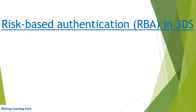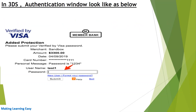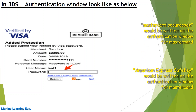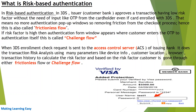Welcome to this session on risk-based authentication (RBA) in 3DS. In previous sessions I explained how 3DS authentication works. This screenshot shows the authentication window displayed to the customer when they make a credit card payment and their card is 3DS enabled — this is the 'Verified by Visa' window for a Visa card.